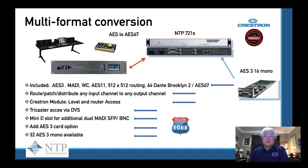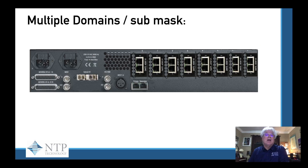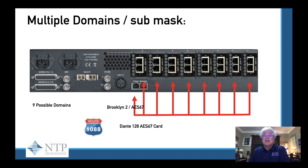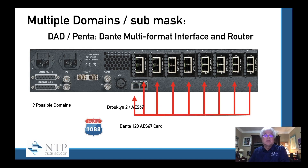The card goes in the expansion slot, and now this unit is called an NTP 721S AES3. It sells for a little under $4,000 MSRP US. The backend of a 720 to take care of all these multiple domains in submask will look like this: we have nine possible domains using the Dante 128 AES67 card with 1,088 channels, our Brooklyn II card installed in the RJ45 port, and expansion cards put in each of the eight slots, giving you access to all these multiple domains through Dante's multi-format interface and router — the Penta 720 or the DAD AX32.